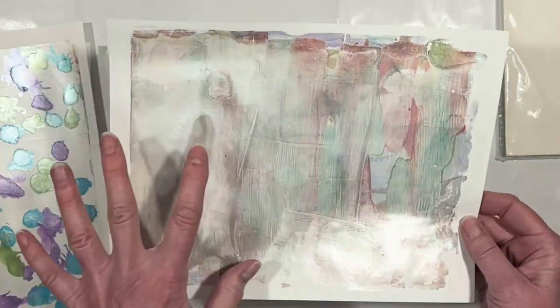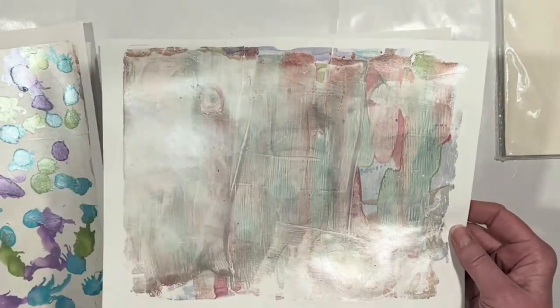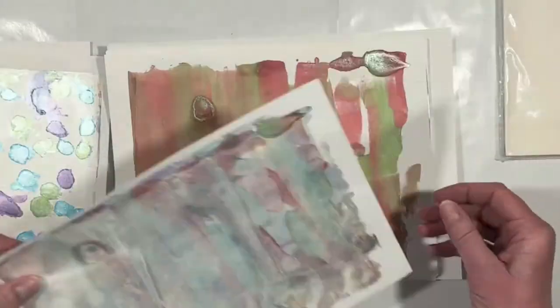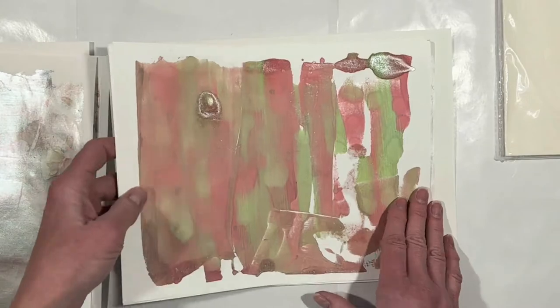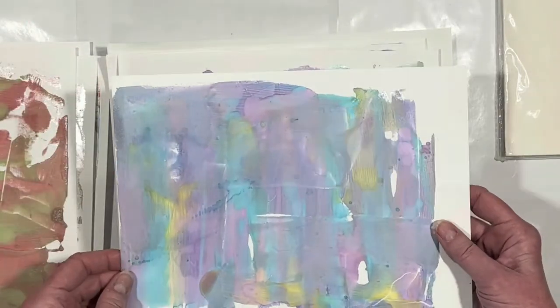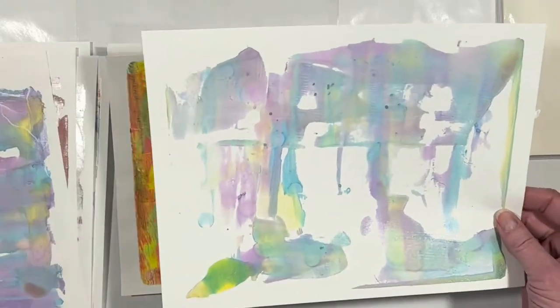This is what was left on the gel plate, and then I put some pearlescent white, the Arteza white paint over it. The results are just night and day different. This is the red and green pearlescent inks. And then we have all of my favorite colors, which are the blues and the purples and the greens. And then we have a second pull.